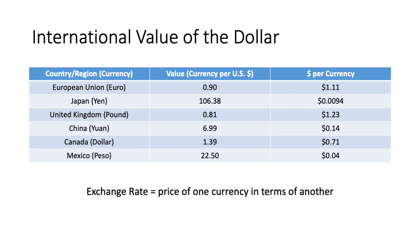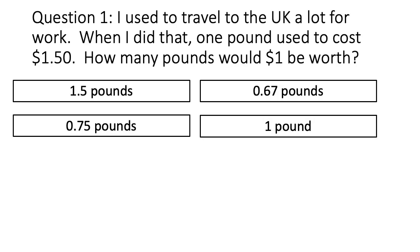In the slides that follow, we are going to think about how the value of a country's currency affects other aspects of its economy, particularly its trade balance. These are the same questions that are in the Kahoot, so you can go through them here or play the Kahoot. Let's get started. I used to travel to the United Kingdom frequently for work. When I did that, I could usually count on a pound being worth about $1.50. When that was true, how many pounds was one dollar worth? The answer is that one dollar was worth about .67 pounds.